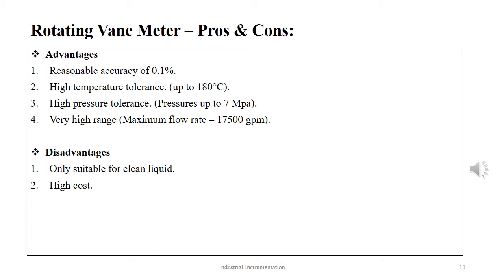The advantages of the rotating vanes meter are: they offer reasonable accuracy that is ±0.1%, very high temperature tolerance up to 180 degrees Celsius, very high pressure tolerance up to 7 MPa, and wide range of operation up to 17,500 gallons per minute.